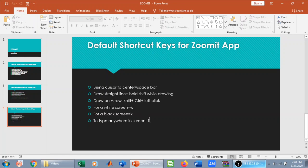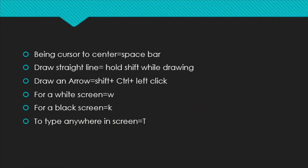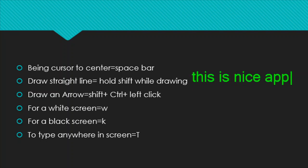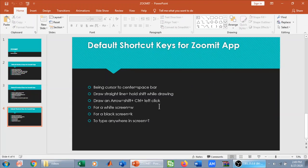To type anywhere on the screen while in zoom in mode, press T. You can move the cursor to wherever you want to write. For example, you can type 'this is a nice app' or any information at any position on screen. Press Escape to exit this mode.